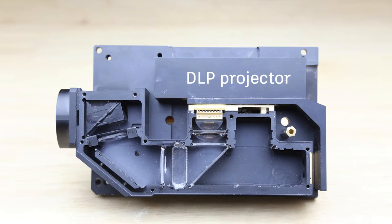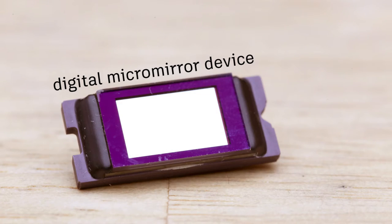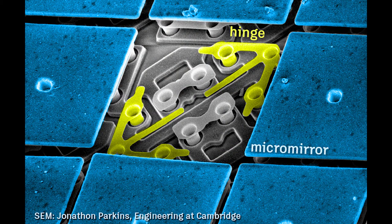Steve here from Autodesk. At the heart of the DLP projector is a digital micromirror device. The DMD contains an array of microscopic square-shaped mirrors.